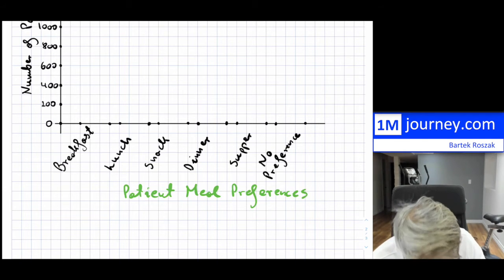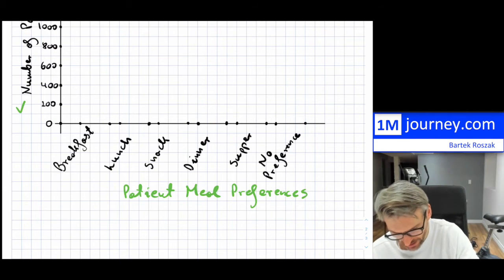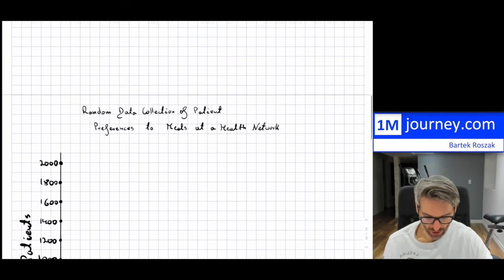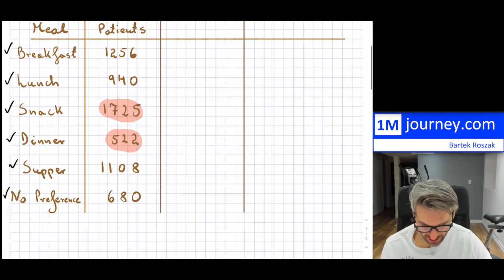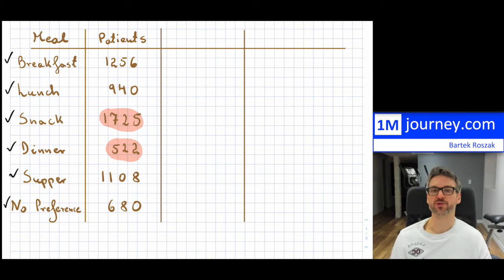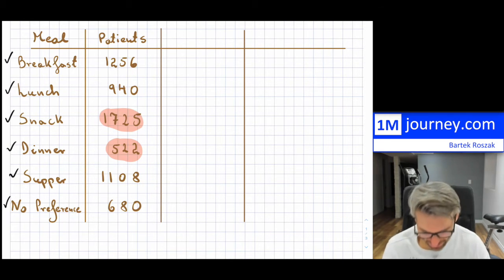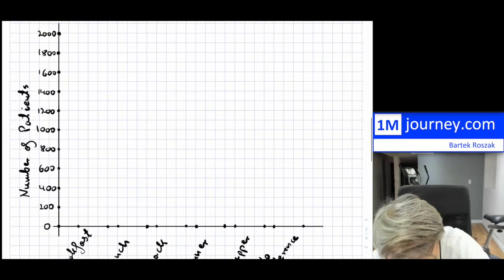Notice we've labeled the y-axis, labeled the x-axis, and we have a title. Now we can go ahead and construct the bars — so 1,256 for breakfast, 940 for lunch, 1,725 for snack — and I'm going to draw the bars accordingly. I'll speed it up so you can see the result.